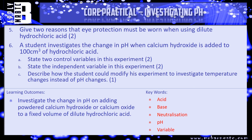Let's move on to questions 5 and 6. Question 5: give two reasons that eye protection must be worn when using dilute hydrochloric acid. Question 6: a student investigates the change in pH when calcium hydroxide is added to 100 centimetres cubed of hydrochloric acid. Part A: state two controlled variables. Part B: state the independent variable. Part C: describe how the student could modify the experiment to investigate temperature changes instead of pH changes. Pause the video and have a go.